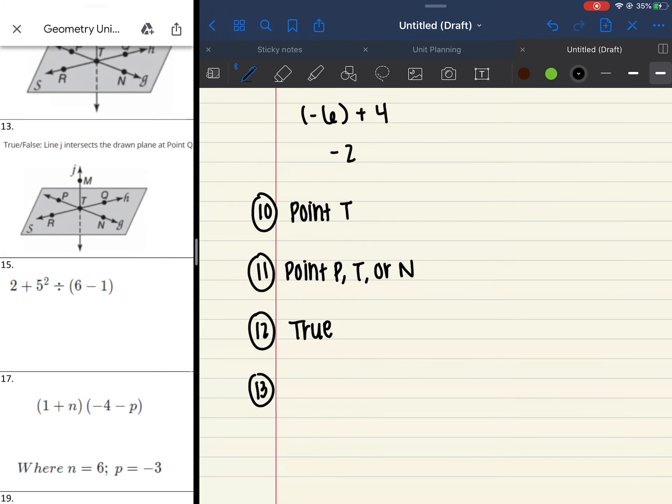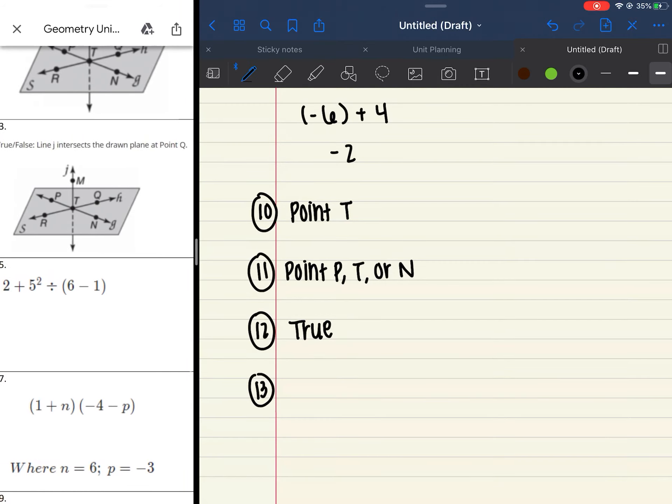Number 13. I said line J, which is the one going up and down, intersects the drawn plane at point Q. Remember, we talked about when it intersects, it goes from a solid to a dashed line, and it does that at point T. So this one would have been false.